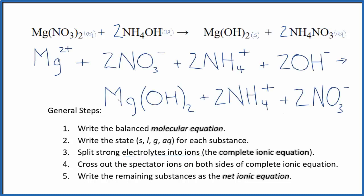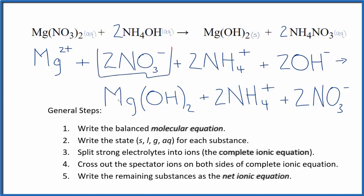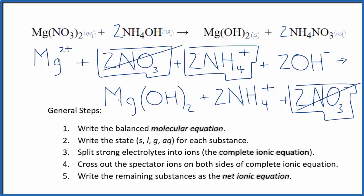Now we can cross out spectator ions — those that appear on both sides of the complete ionic equation. In the reactants I have two nitrate ions, and in the products I also have two nitrate ions, so those are spectator ions and we cross them out. I also have two ammonium ions in the reactants and two in the products, so we can cross those out as well.